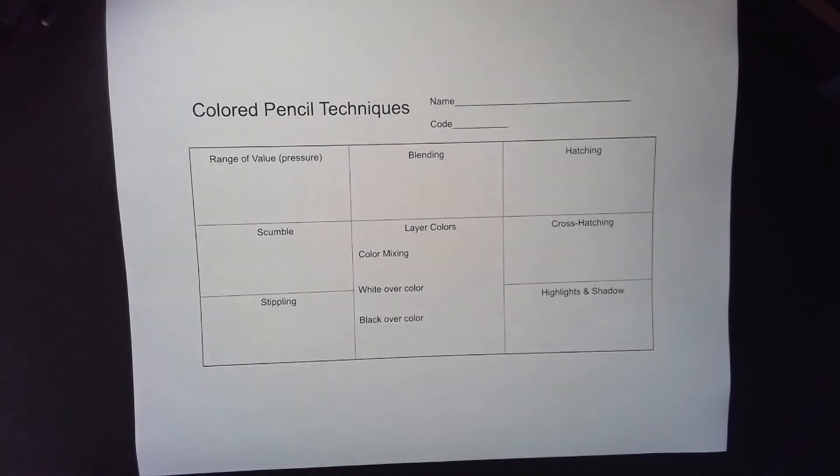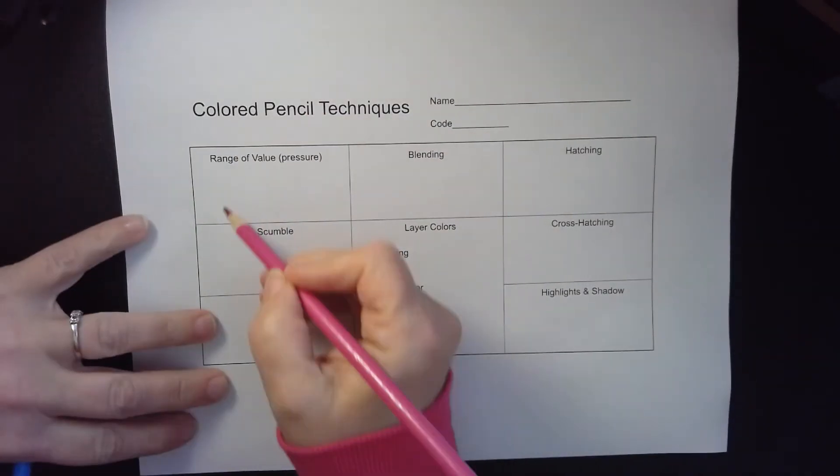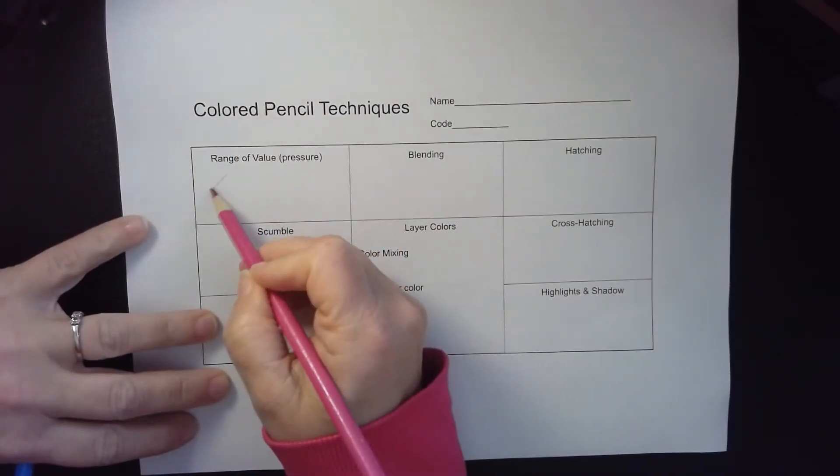So let's go over your colored pencil techniques so you know what you're going to have to do on this project. Range of value is just going to be the amount of pressure that you put on your pencil.